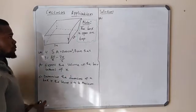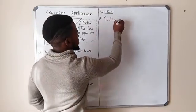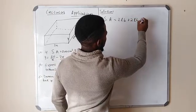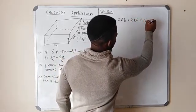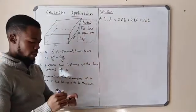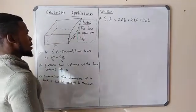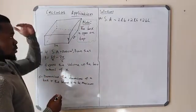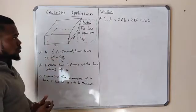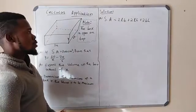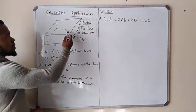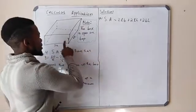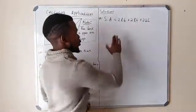Let us take a look at the formula for calculating the surface area of a box: surface area equals 2(length × breadth) plus 2(length × height) plus 2(breadth × height). Now, it is said that the box is open on top, which means we remove one length × breadth face. We only have one side of length × breadth, which is the base, because on top the box is open.